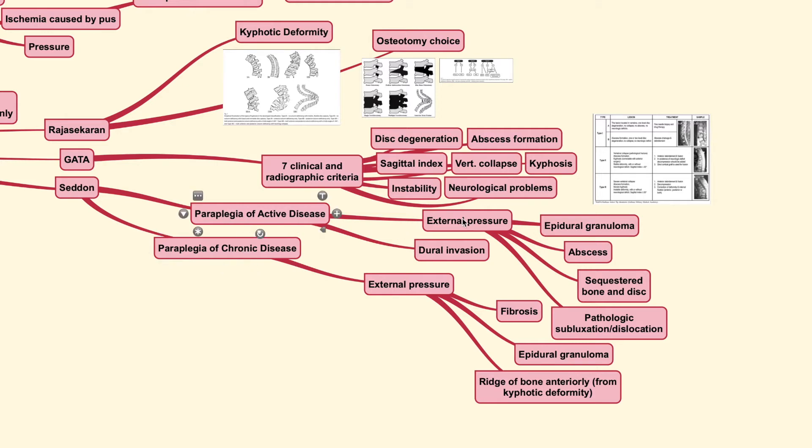They classify this condition into paraplegia of the active disease and also paraplegia of the chronic disease. With paraplegia of the active disease, usually the external pressure that goes on to the spinal cord is caused by the epidural granuloma, abscess or even sequestered bone and disc and pathologic subluxation and dislocation that occurs on the spine due to the bone destruction. But it could also be caused by dural invasion.